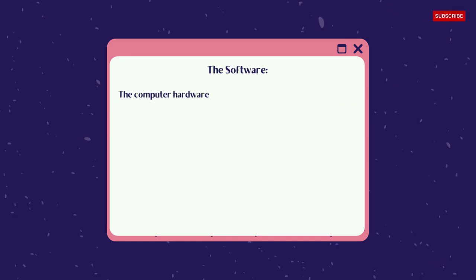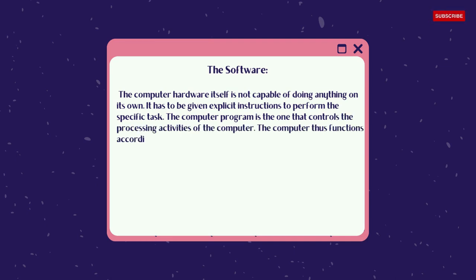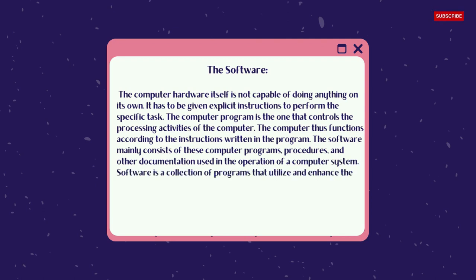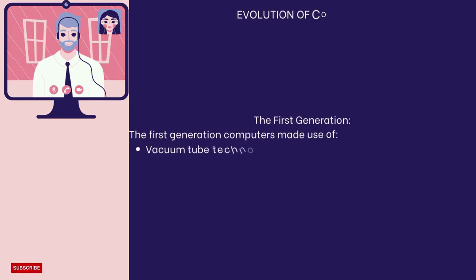The software. The computer hardware itself is not capable of doing anything on its own. It has to be given explicit instructions to perform a specific task. The computer program is the one that controls the processing activities of the computer. The computer functions according to the instructions written in the program. The software mainly consists of computer programs, procedures, and other documentation used in the operation of a computer system. Software is a collection of programs that utilize and enhance the capability of the hardware.